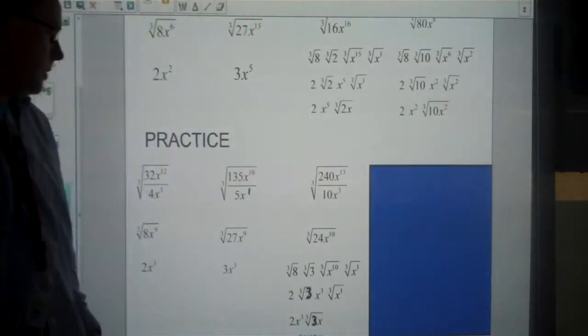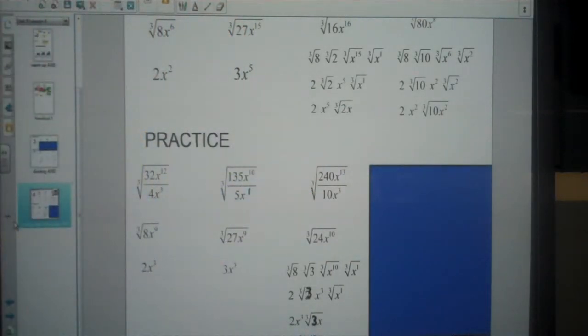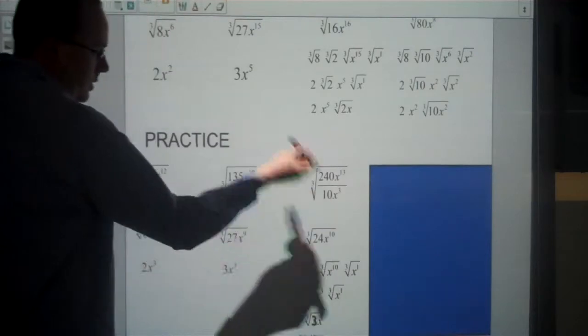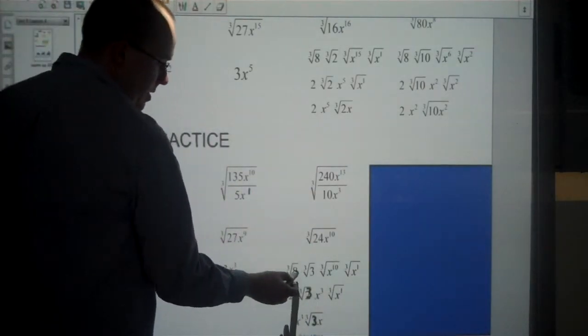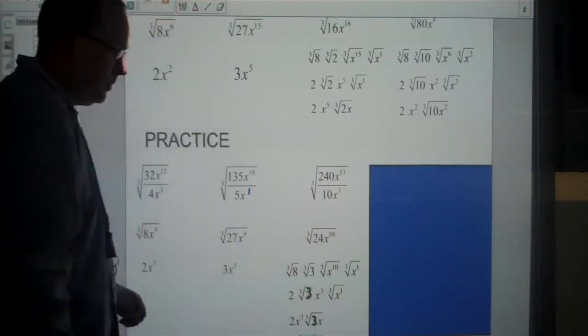Then we get to the more complicated ones. 240 divided by 10 is 24. x to the 13 divided by x to the 3 is x to the 10, subtracting the exponents. 24 we can break up as 8 and 3, because the cube root of 8 is 2. x to the 10 doesn't work perfectly.